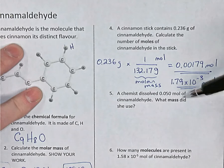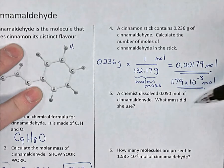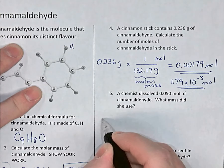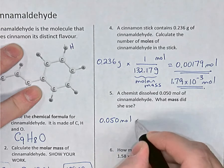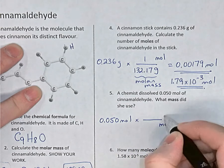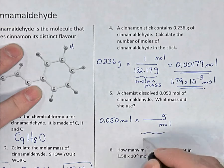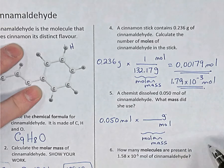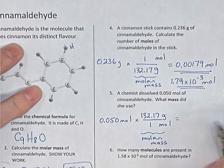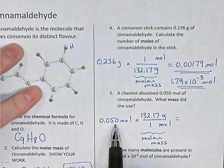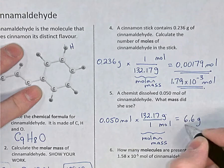Question five is the reverse: 0.050 moles of cinnamaldehyde was dissolved. What mass was used? We take 0.050 moles and convert to grams using the molar mass — one mole equals 132.17 grams. Multiplying, we have two significant digits times five, so we keep two digits: the answer is 6.6 grams was dissolved.